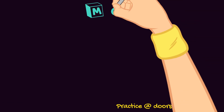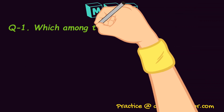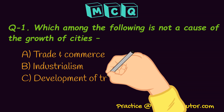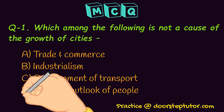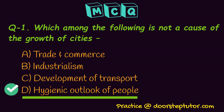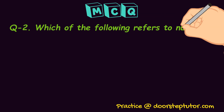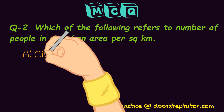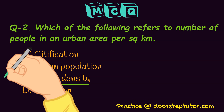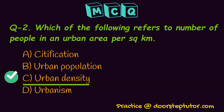Now for a few questions. First: which among the following is not a cause of the growth of cities? The correct answer is the fourth option — hygienic outlook of people — because the first three directly aid the growth of cities. Second: which of the following refers to the number of people in an urban area per square kilometer? The correct answer is urban density, not urban population, because density is calculated per square kilometer.